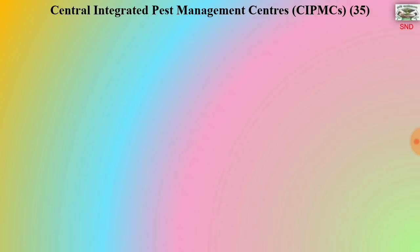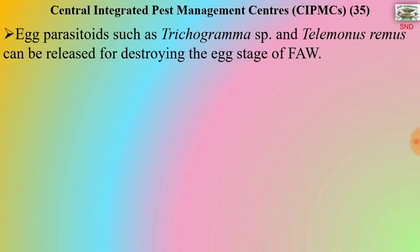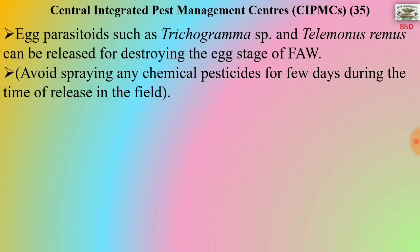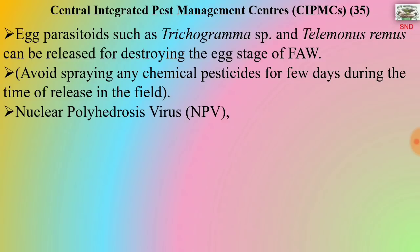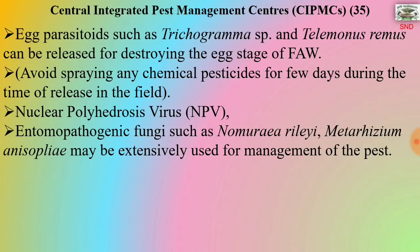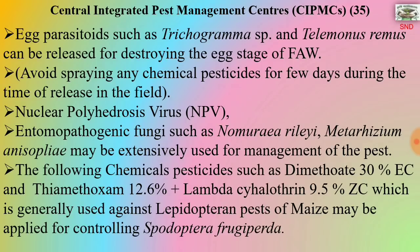The Central Integrated Pest Management Centres (CIPMCs), of which there are 35, have dispersed management strategies and advisories. Egg parasitoids such as Trichogramma species and Telenomus remus can be released for destroying the egg stage of fall army worm. A strict warning is given to avoid spraying any chemical pesticide for a few days during the time of release in the field. Nuclear polyhedrosis virus should be used. Entomopathogenic fungi such as Nomuraea rileyi, Metarhizium and Beauveria may be extensively used. The chemical pesticides Dimethoate 30% EC and Thiamethoxam 12.6% plus Lambda-cyhalothrin 9.5% ZC, generally used against Lepidopteran pests of maize, may be applied for controlling fall army worm.